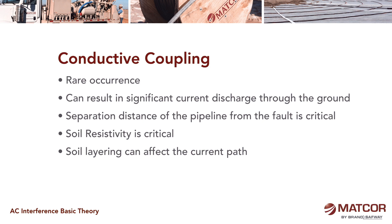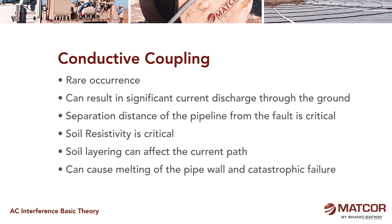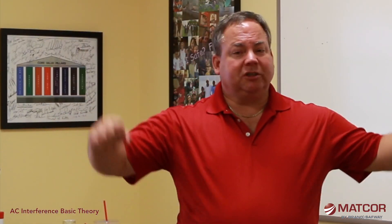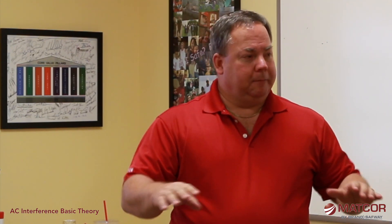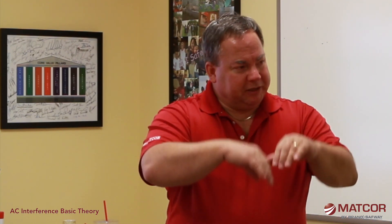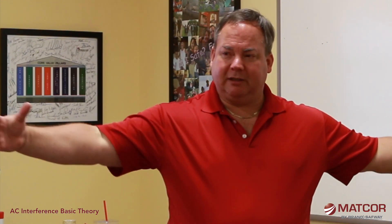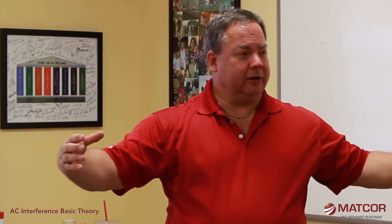Arcing is not easy to occur and is relatively rare, but it would cause melting of the pipe wall and catastrophic failure. The other issue with conductive coupling is that when all this current is discharged into the earth, we have what's called a voltage rise in the earth. From the point where the current is being dumped, you get this voltage rise that radiates outward — highest voltage in the middle — and the further out you get, the less the voltage.